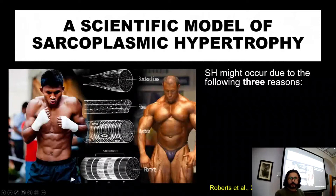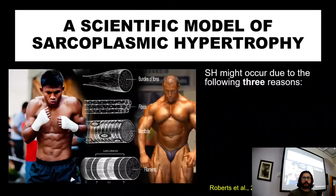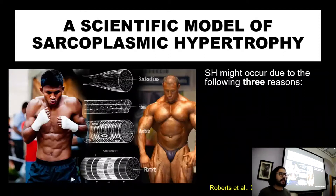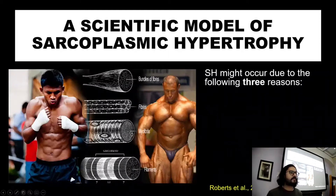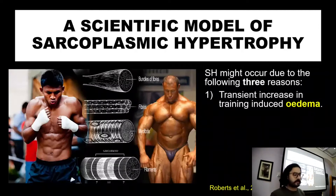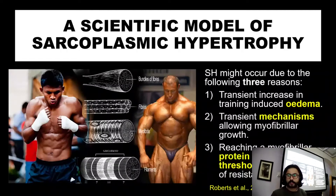So then we move on. What is the scientific model of sarcoplasmic hypertrophy and why might it occur? I've got the model as proposed by Roberts et al, which is a very good review summarising all of the research in the area. There are a couple of things that might explain why sarcoplasmic hypertrophy actually occurs.